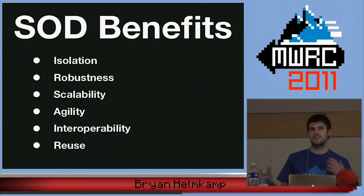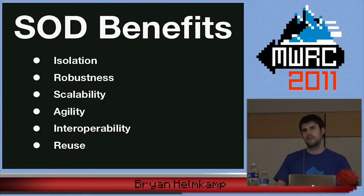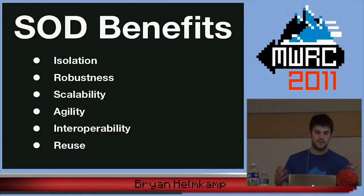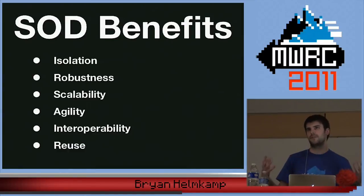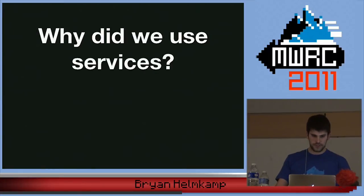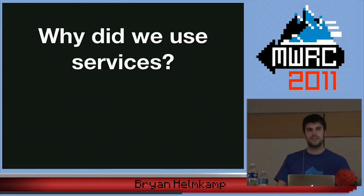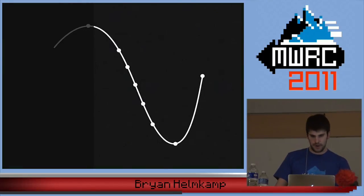Interoperability: taking disparate systems and connecting them together. Twitter is a good example — they have Scala services providing HTTP endpoints that Ruby code uses. You can speak a common language. And then reuse: if you have a public API you can start using it internally, or vice versa. So, why did we use services originally? We were looking for reuse, isolation, and generally just smaller components to be able to deal with.